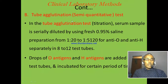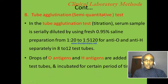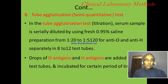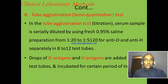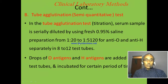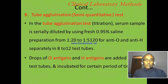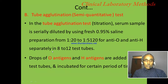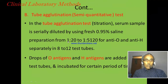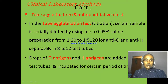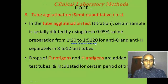The second method is the tube agglutination method, which is a semi-quantitative method to partially determine the amount of antibody. In this technique, the serum is serially diluted from 1:20 up to 1:5120 according to the number of tubes.